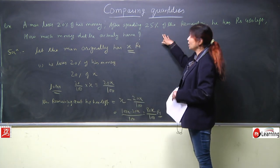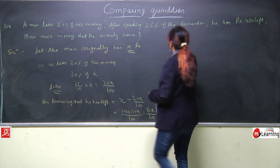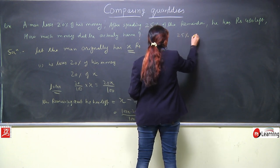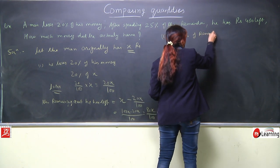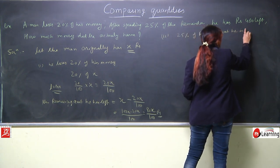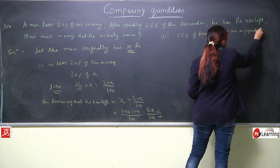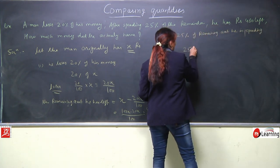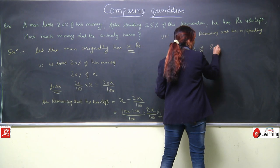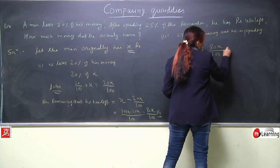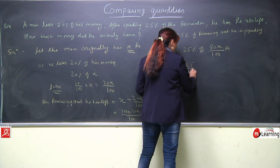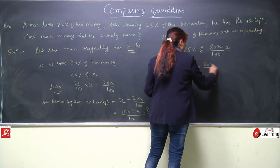Now remaining amount he has left is - he had x rupees. From that he loses this much. So it is 100x minus 20x upon 100 which is equivalent to 80x by 100 rupees. Keep in mind the units. This much amount he has left. Now from that left amount he also does expenditure. This becomes the second part. 25 percent of remaining amount he is spending.